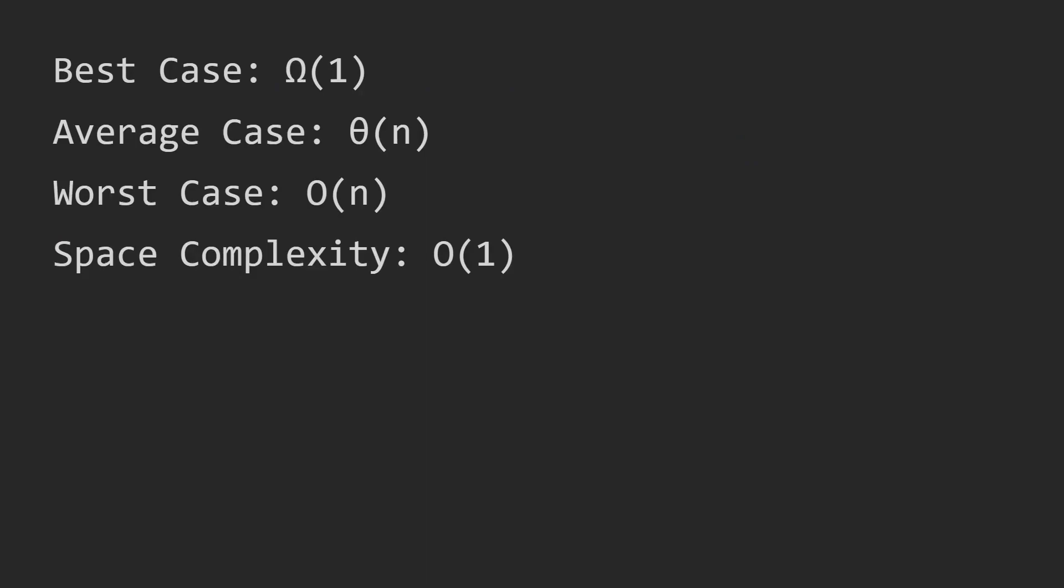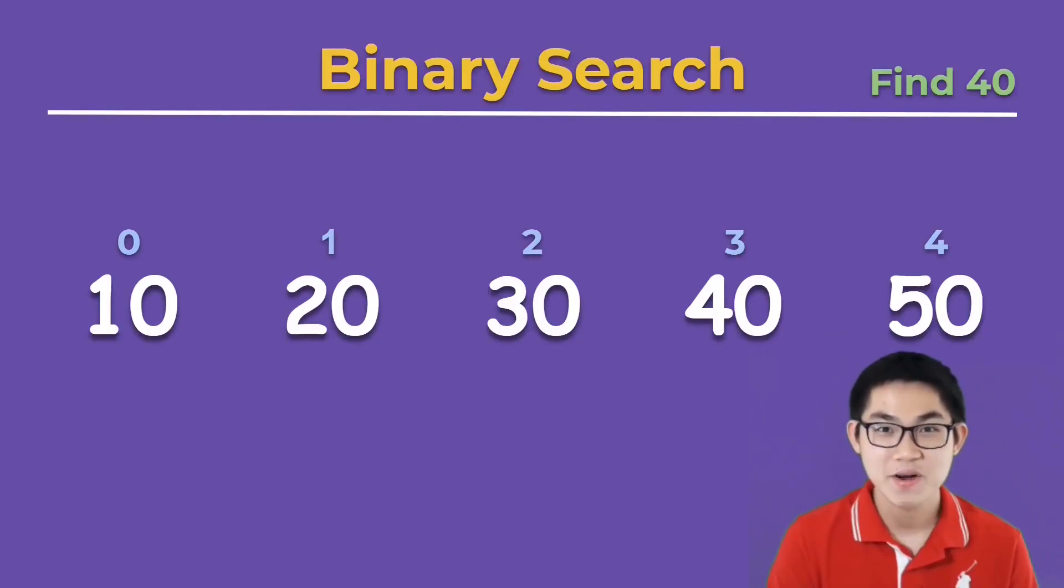In the worst and average cases you have to traverse the entire list and find the element at the end of the list, or you don't find it inside the array at all. The best case is when you find the number right at the beginning of the array, so that is O(1). In the next video we will discuss binary search, which is faster than linear search.